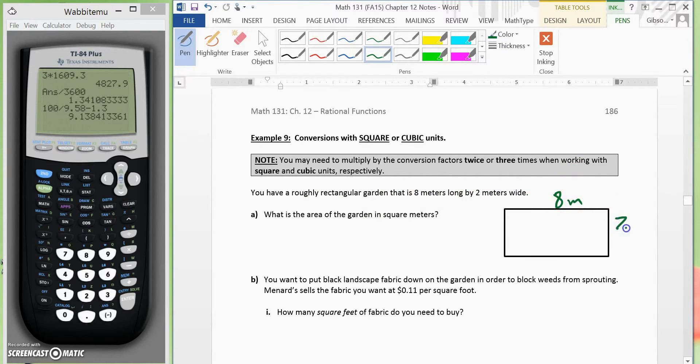So, let's mark that 8 meters, 2 meters. What is the area of the garden in square meters? So, we would take area is equal to length times width. Area is equal to 8 meters times 2 meters. So, the area is equal to 16 square meters.